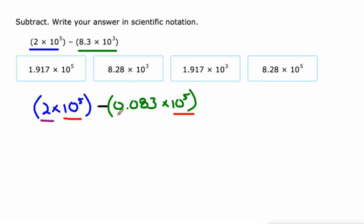We just have to do 2 minus 0.083. That's 1.917 times 10 to the fifth. There it is, 1.917 times 10 to the fifth.